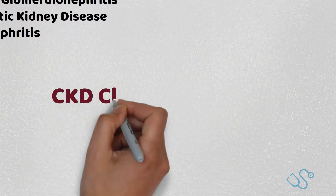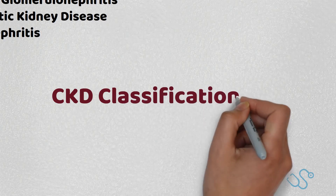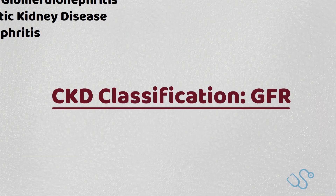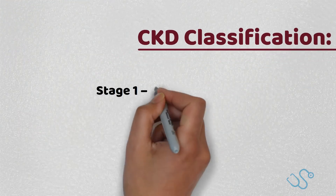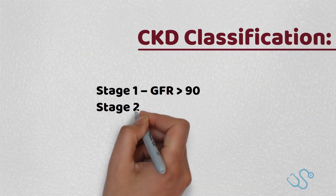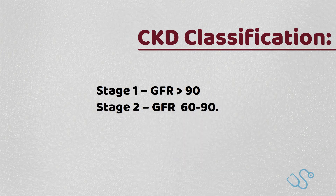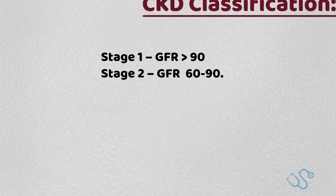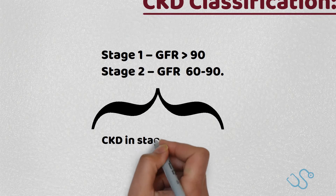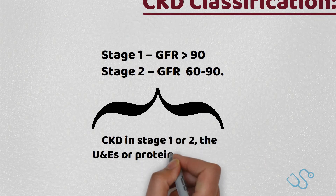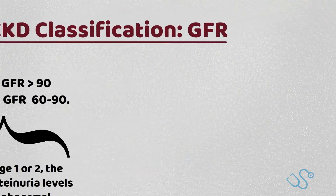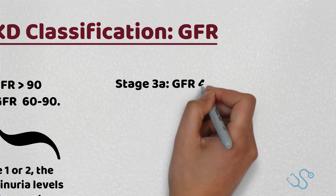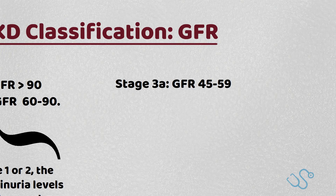It's also worth considering the classification of chronic kidney disease and its staging, which is generally done by GFR or the glomerular filtration rate. Stage 1 is defined as a GFR greater than 90, and Stage 2 is a GFR greater than 60 but less than 90 — though it's worth noting that for Stage 1 and 2, urine or protein and urea levels also need to be abnormal. Stage 3a is a GFR between 45 and 59 and can be diagnosed purely on the GFR level on the blood.